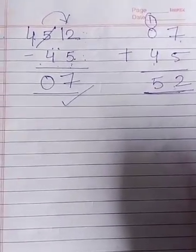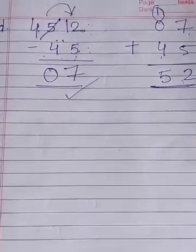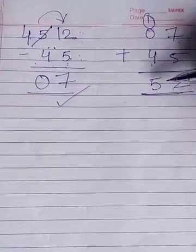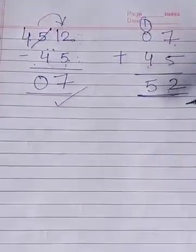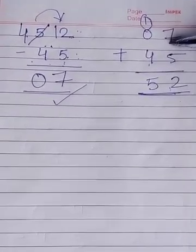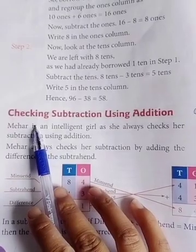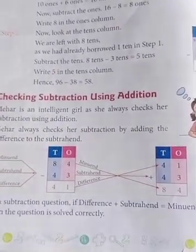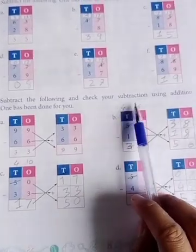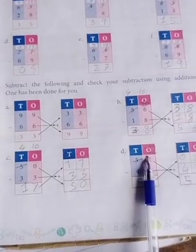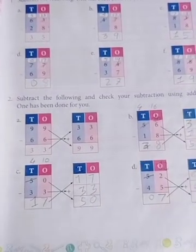So in this way you can check whether your answer is correct or not. We add the difference and subtrahend, and we check whether the result is the same as the minuend. If it is the same, then our answer is correct. Write the heading 'Checking Subtraction Using Addition' and the question 'Subtract the following and check your subtraction using addition' — parts A, B, C, and D. Do them in your copy today.